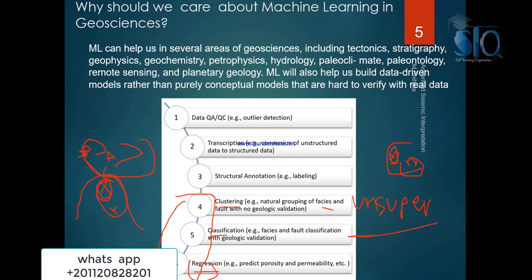Regression is another technique — it is the relationship between data with each other. This is very important to predict petrophysical properties and reservoir characterization. We can create a relationship between attribute one and attribute two, and this relationship can help create an equation. The difference from normal regression is that in machine learning we can divide data into three parts: one for training, one for validation, and one for testing. This is the key point — normal regression cannot do that.